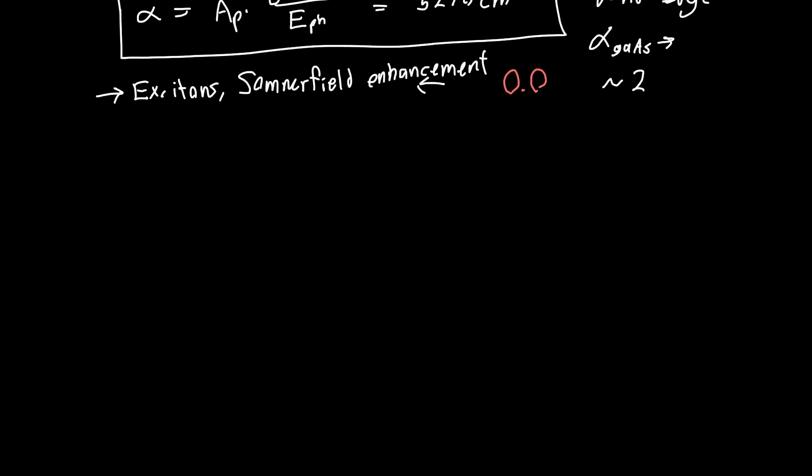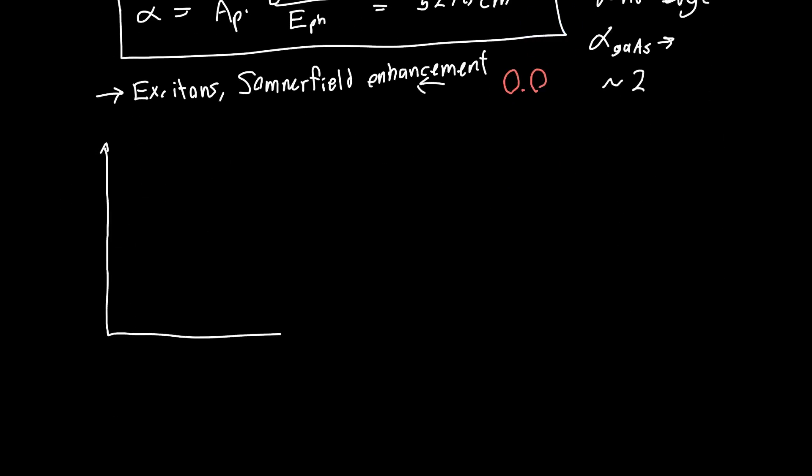So now let's sketch out the absorption spectra. So we know, and let's sketch it from 0 to 0.1 electron volts, or let's sketch it from 0 eV to our band gap, which is about 1.4 eV, or 1.42 eV, and then to 1.52 eV. So that's our band gap, and this is our band gap plus 0.1 eV.